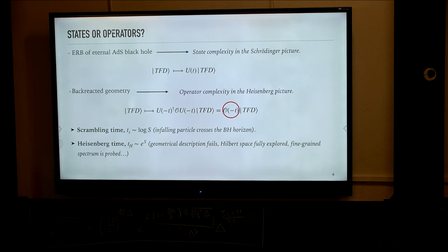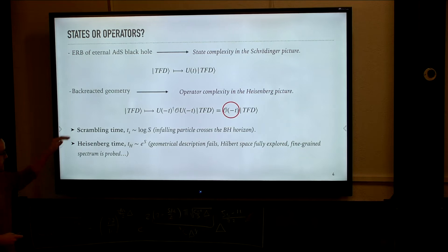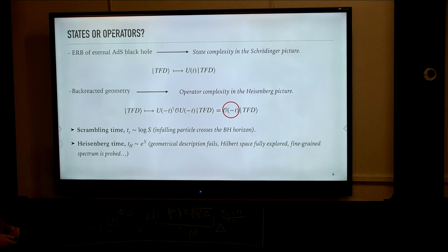The second question is complexity of what — complexity of states or of operators. In the first picture I showed earlier, we just had a pure BTZ black hole whose Einstein-Rosen bridge we were discussing. One could make an argument that the boundary quantity that captures that growth is just the complexity of the time evolution of the thermofield double state, because the time equals zero slice is dual to the thermofield double state. So the Einstein-Rosen bridge should be somehow encoded in the evolution of this state.